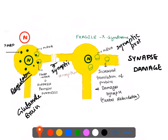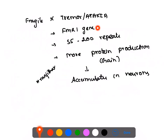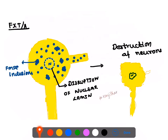Fragile X Tremor Ataxia is different from Fragile X Syndrome because the pathogenesis is different. It involves the same FMR1 gene, but the difference lies in the number of repeats — just 55 to 200 repeats. With 55 to 200 repeats, it is a pre-mutation that actually increases protein production rather than decreasing it. When FMRP production is increased, the protein accumulates in neurons.